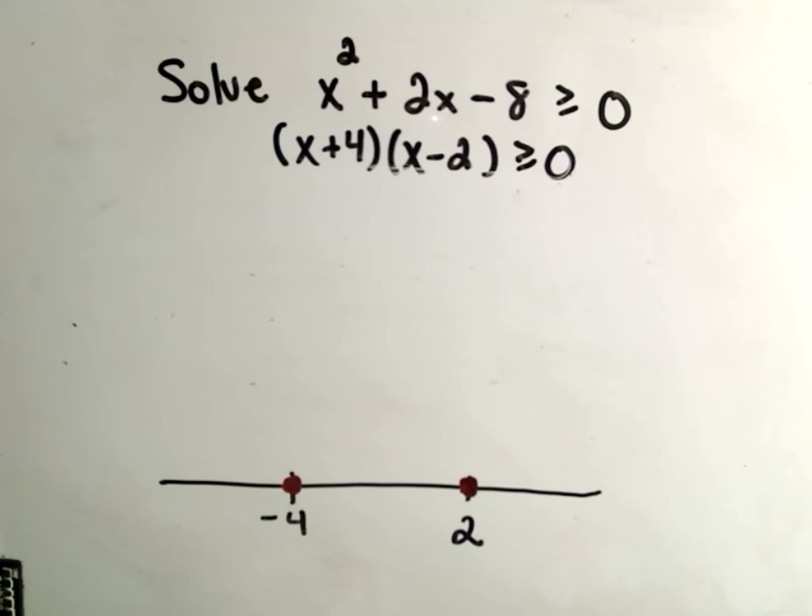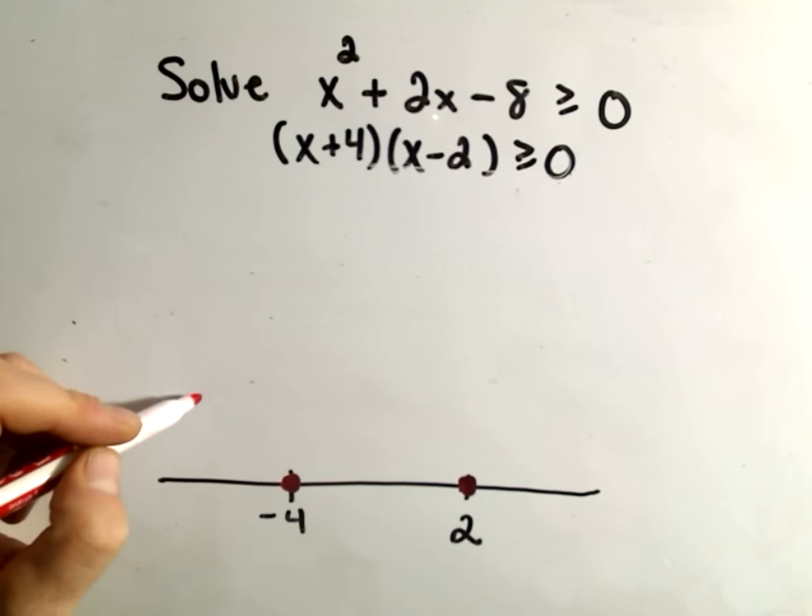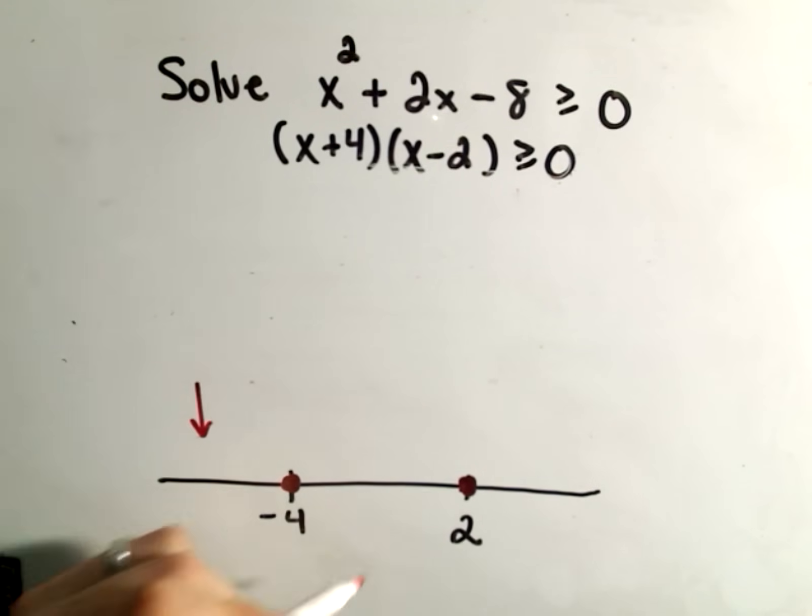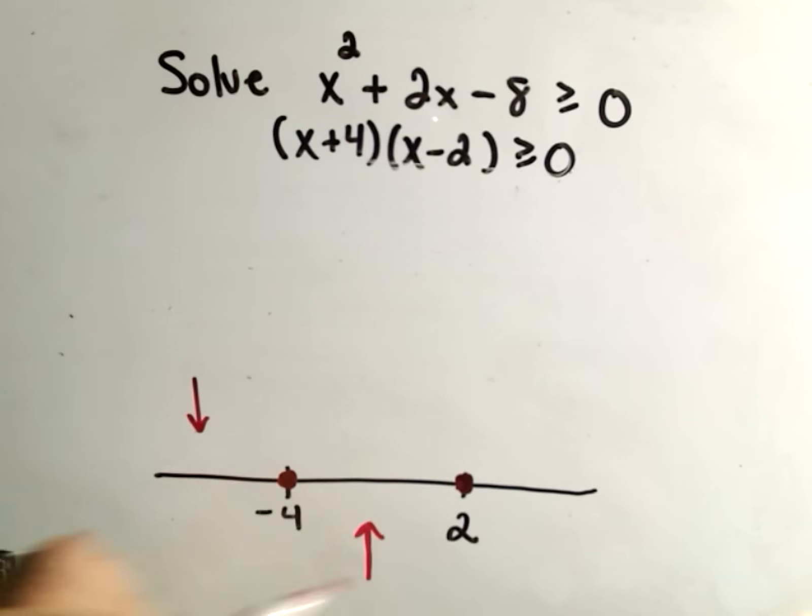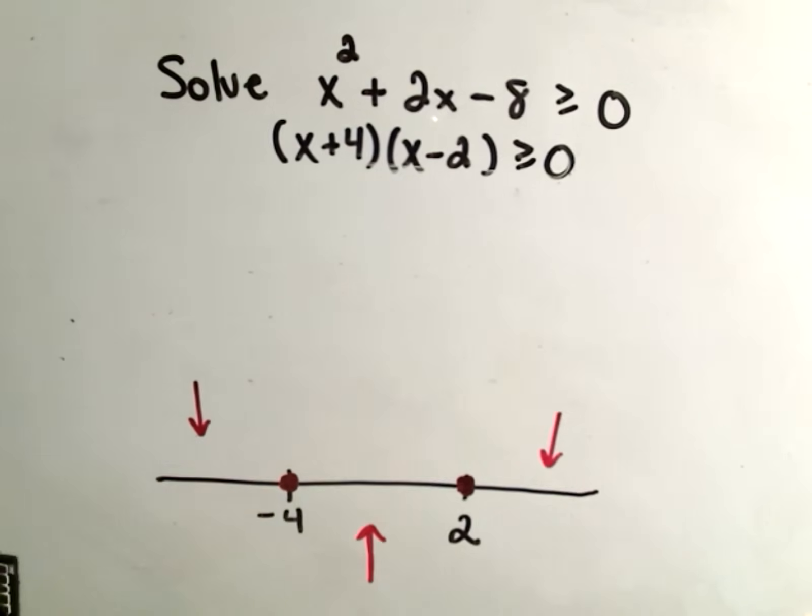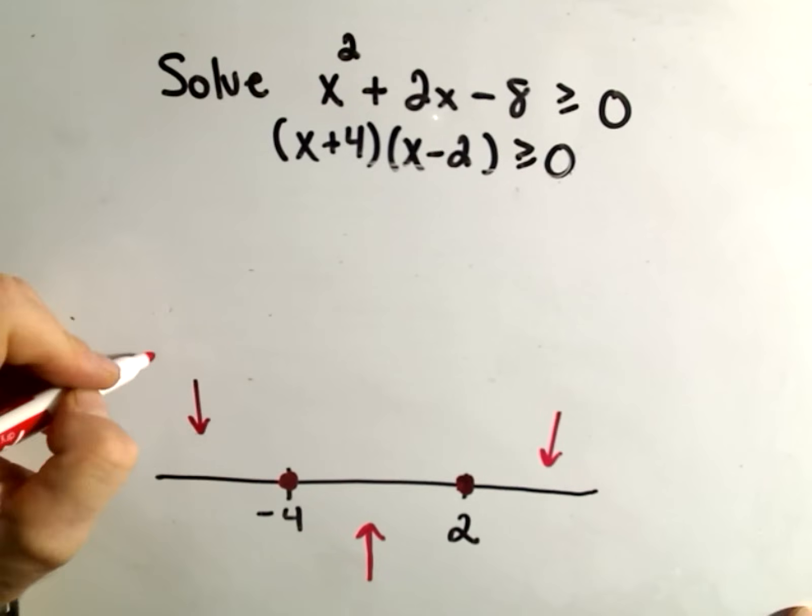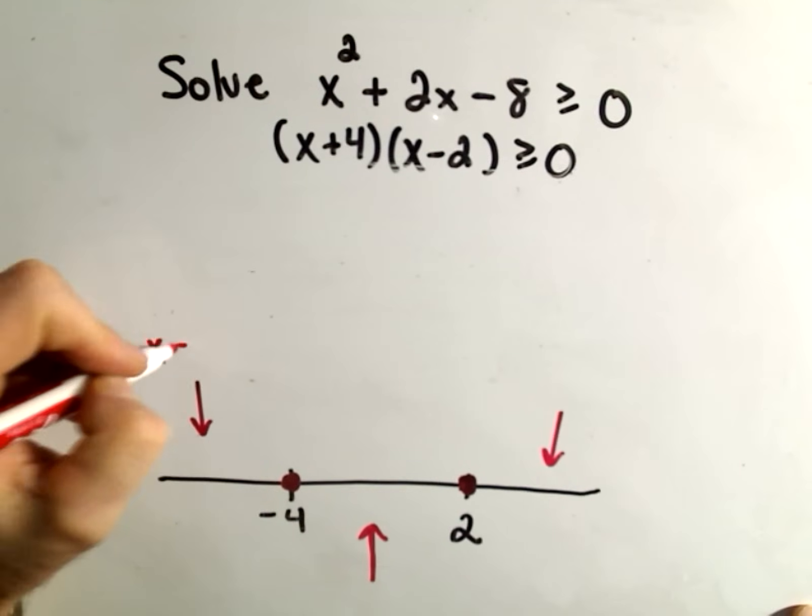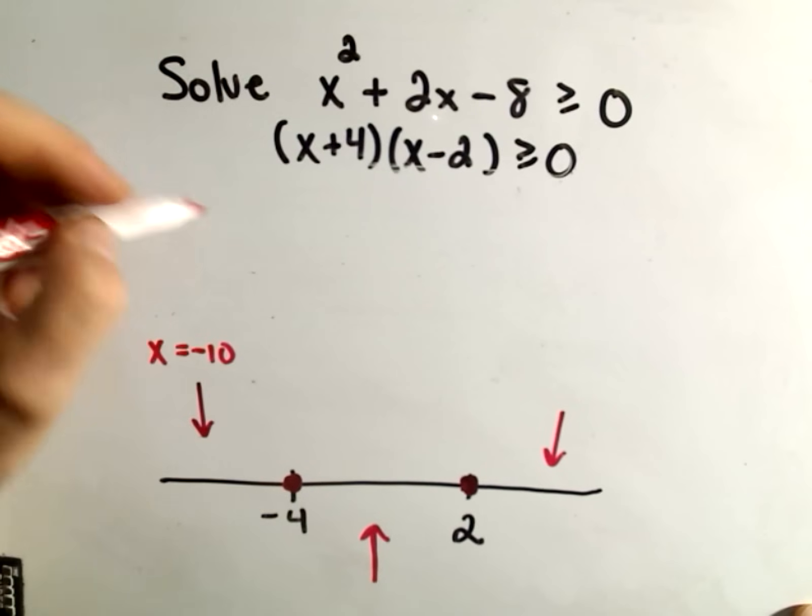So now we simply have to check a number from each interval. We have to check a number smaller than negative 4, in between negative 4 and 2, and then we'll pick a number bigger than 2. Pick any number that you want. So maybe I'll plug in x equals negative 10, and I'll check that.